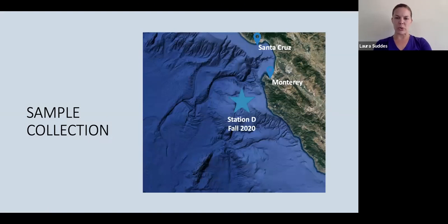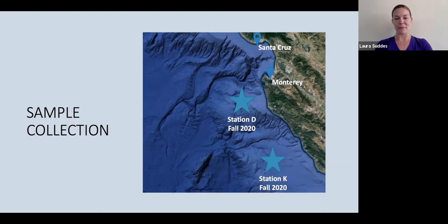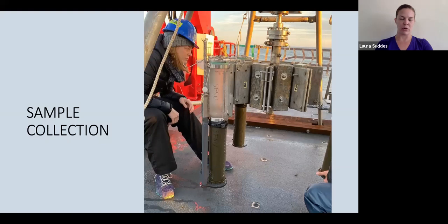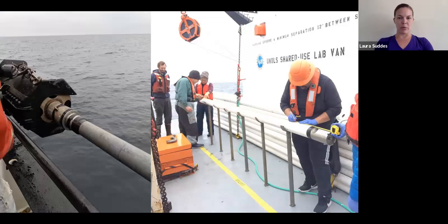Our samples were collected from two sites in the California borderlands this fall, at stations D and K. Those sites are offshore from Big Sur and we collected the samples aboard the RV Seculiak. Both sites have relatively high pore water DOC concentrations, making them appropriate study sites for analysis of pore water DOC. Samples were collected using a multi-core — there's me checking out the multi-cores — which samples the top 30 to 40 centimeters of sediment. We also used a Big Bertha core, which samples the top three meters of the sediment column.